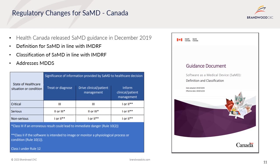In Canada, in December 2019, Health Canada published their guidance document on software as a medical device. Similar to the EU and Australia, Canada also adopted the IMDRF framework for software as a medical device, including the definitions we spoke about earlier, and classification based on the significance of the information provided by the software to a healthcare decision and on the state of the healthcare situation or condition. The classifications are defined within the current classification Rule 10 and 12, with low-risk software classified as Class 1 and higher risk as Class 3.